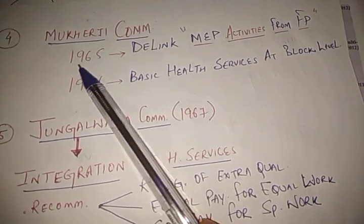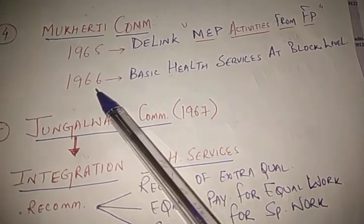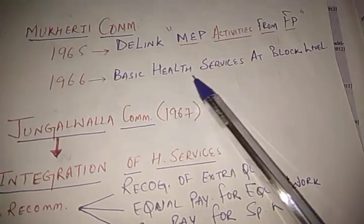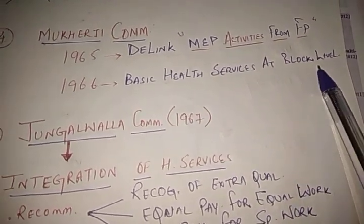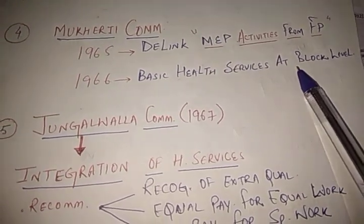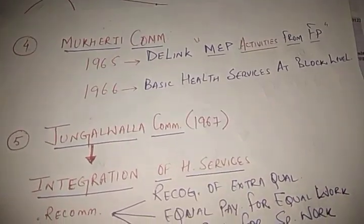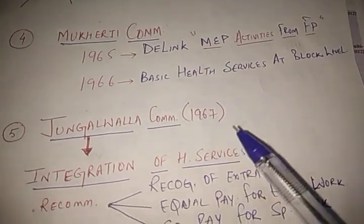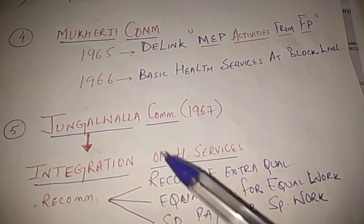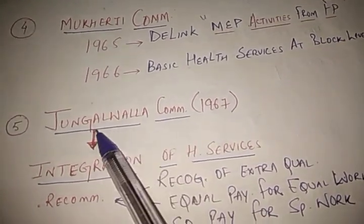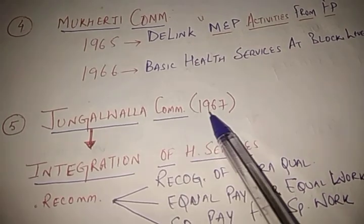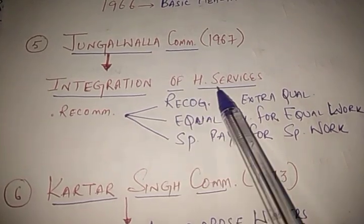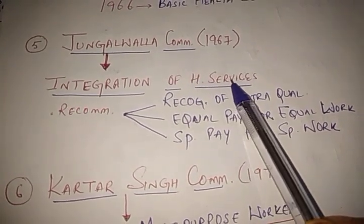Mukherjee Committee one came in 1965 and another in 1966, and it put its recommendation that there should be provision of basic health services at the block level. Then all the services provided in the Bhore, Mudaliar, Chadha, and Mukherjee committees were integrated by the very important Jungalwalla Committee, which came in 1967, and it does the integration of all these health services.